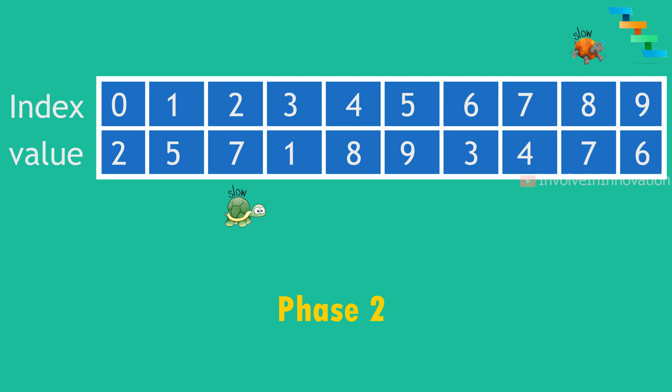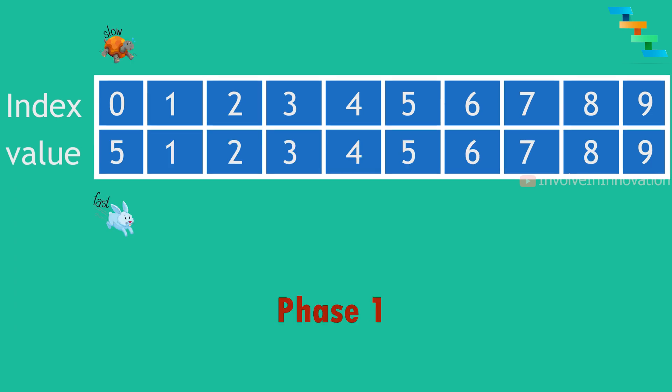An interesting edge case is an isolated cycle, where an index points to itself. Consider the array [5,1,2,3,4,5,6,7,8,9]: indices 1 through 9 are each isolated cycles. Starting at index 0, the slow pointer moves one step to index 5, the fast pointer also reaches index 5 and gets caught in the isolated cycle, staying at index 5. Both slow and fast point to value 5, so 5 is the intersection point. Note that the array cannot contain 0, since starting at index 0 would trap both pointers immediately.